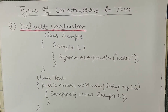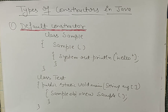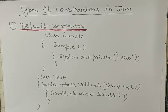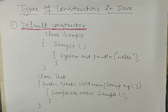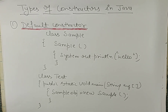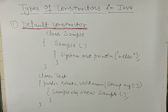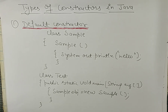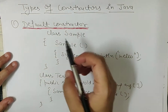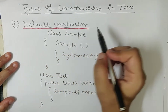Hello everyone. The next topic in our Java programming tutorial is types of constructors. I have explained the introduction of constructors in my previous video — please watch that first. Briefly, a constructor is a special type of method whose purpose is to initialize values at the time of object creation, and its name is the same as the class name.